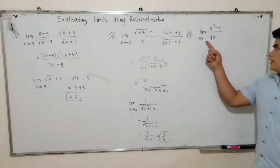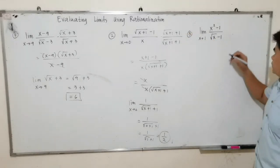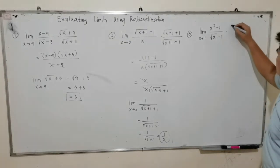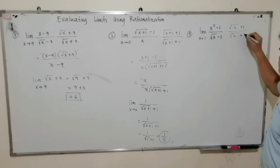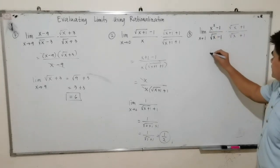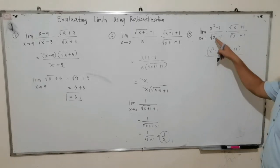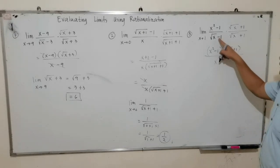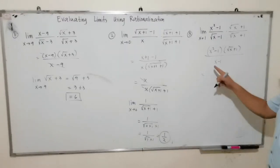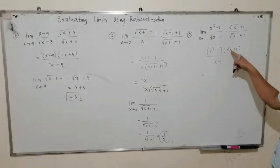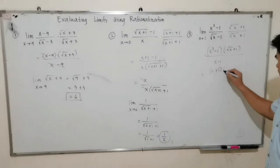For number 3, substituting 1 again gives 0 over 0. So by rationalization, we multiply by the conjugate of the denominator, square root of x plus 1 over square root of x plus 1. Multiplying gives x squared minus 1 times square root of x plus 1, over x minus 1. Now x squared minus 1 is factorable as x plus 1 times x minus 1.